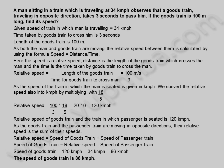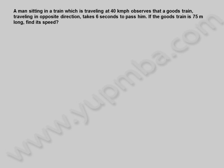Let us see another example. A man sitting in a train which is traveling at 40 kilometers per hour observes that a goods train, traveling in opposite direction, takes 6 seconds to pass him. If the goods train is 75 meters long, find its speed.